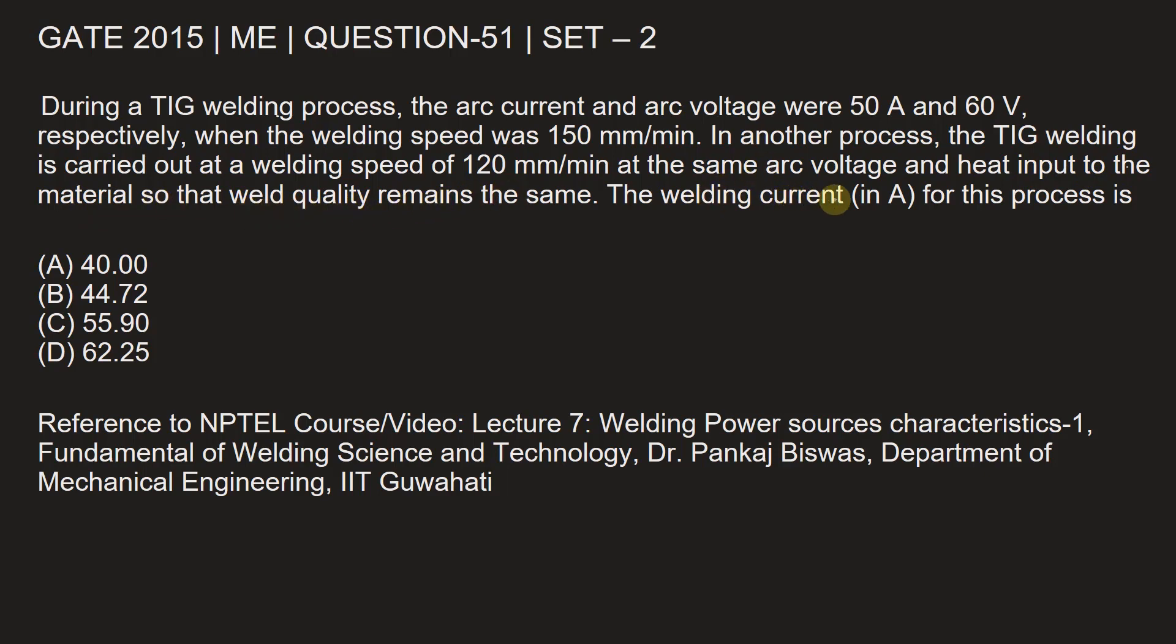The welding current in ampere for this process is—let's write the given information here. There are two TIG welding processes, TIG1 and TIG2. For TIG1, the information given is: current I₁ is 50 ampere, voltage V₁ is 60 volt.